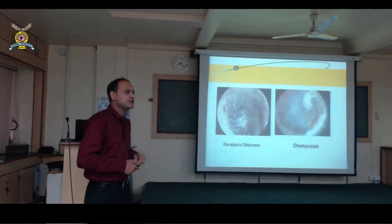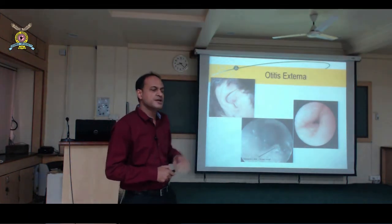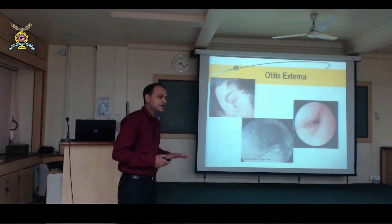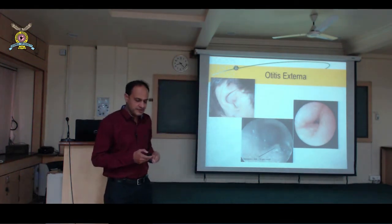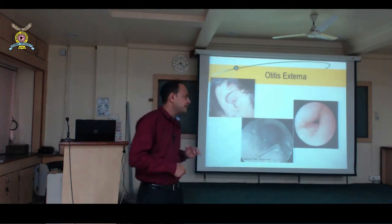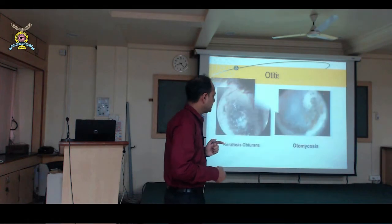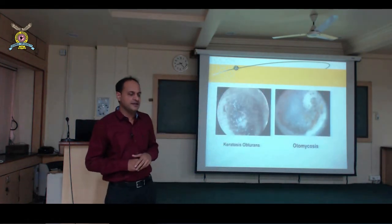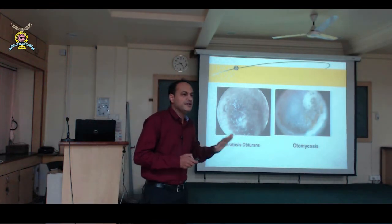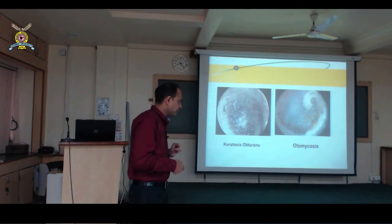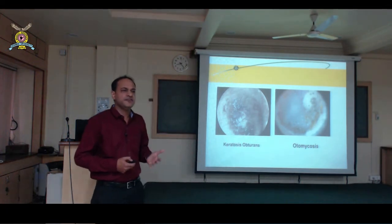Otitis externa has two causes: bacterial and fungal. Fungal otitis externa is called otomycosis; bacterial is most commonly caused by Staphylococcus aureus. Instead of giving ear drops, start a good amoxicillin-clavulanate antibiotic and a topical ointment — plain povidone iodine or soframycin with or without steroid. If you don't see a boil but there is tragal tenderness, it may be otomycosis. In that case, do not give antibiotic ear drops; give antifungal drops, as antibiotics or wax solvents will increase fungal growth.